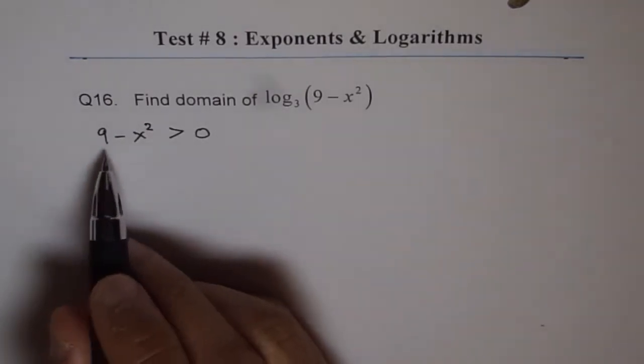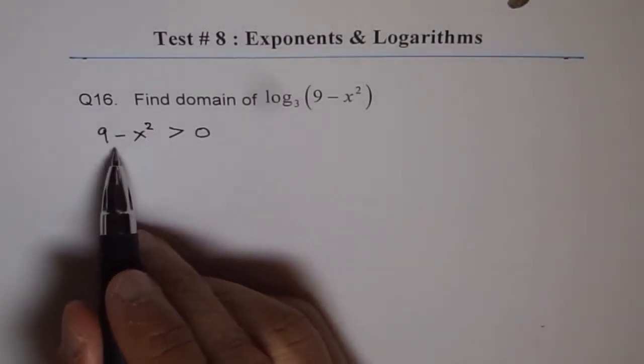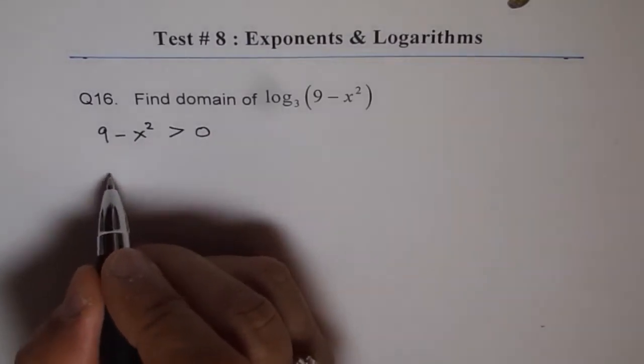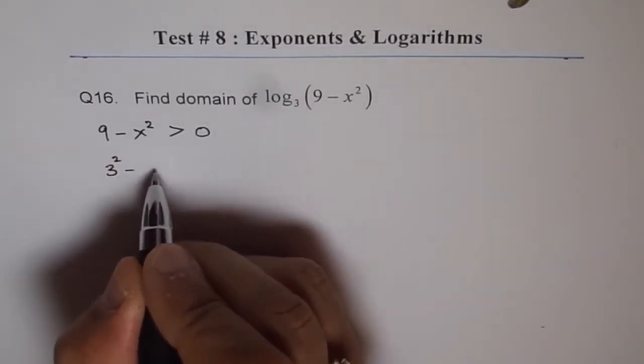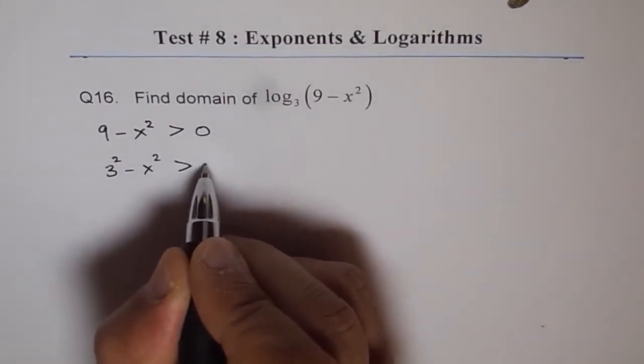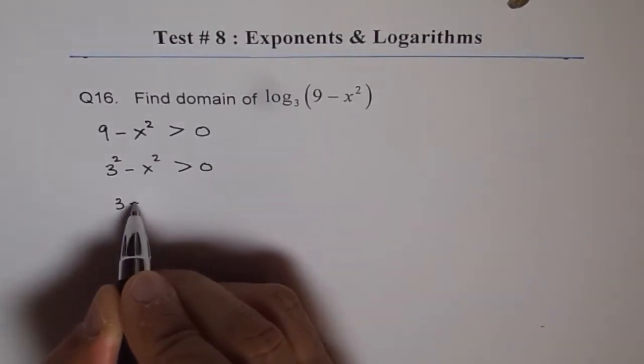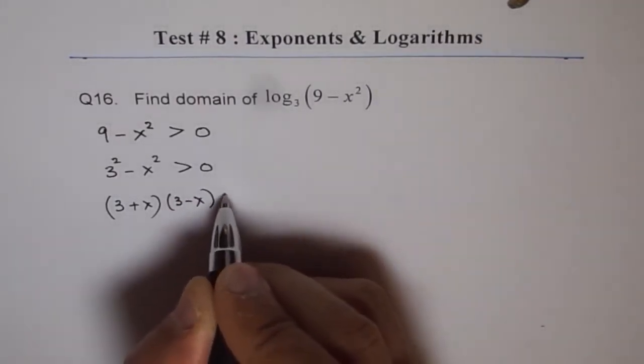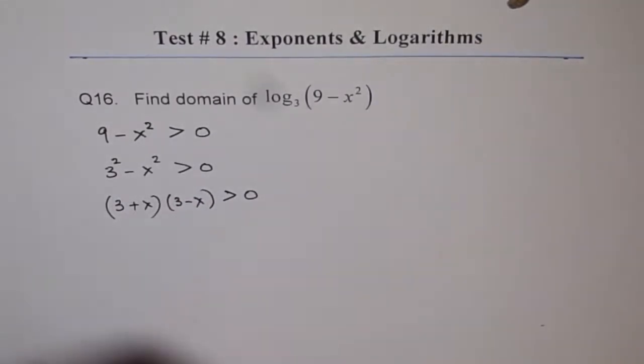Simple as that. As you have done inequalities we will continue with the same process. 9 minus x square can be factored. 9 is like 3 square minus x square. We want greater than 0. So this is 3 plus x times 3 minus x, and we want that to be greater than 0.